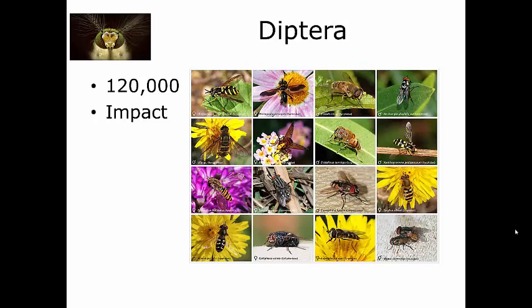Other fly species can also vector diseases important to animals. Flies also include species that produce myiasis — the feeding on the tissues of a living organism. They may feed on blood as well, causing many problems. However, remember that there are quite a few beneficial species in the Diptera: pollinators, decomposers, and biocontrol agents for other pest insects.